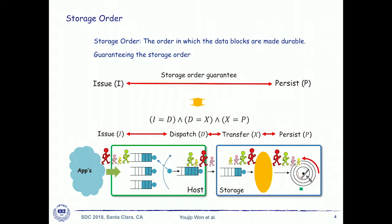The next important concept is storage order — the order in which data blocks are made durable. To enforce storage order from issue order to persist order, you must satisfy a partial order between three pairs: I and D must align, then dispatch order and transfer order must align, and then transfer order and persist order must align. If all three conditions are satisfied, you can control storage order throughout the entire I/O stack.